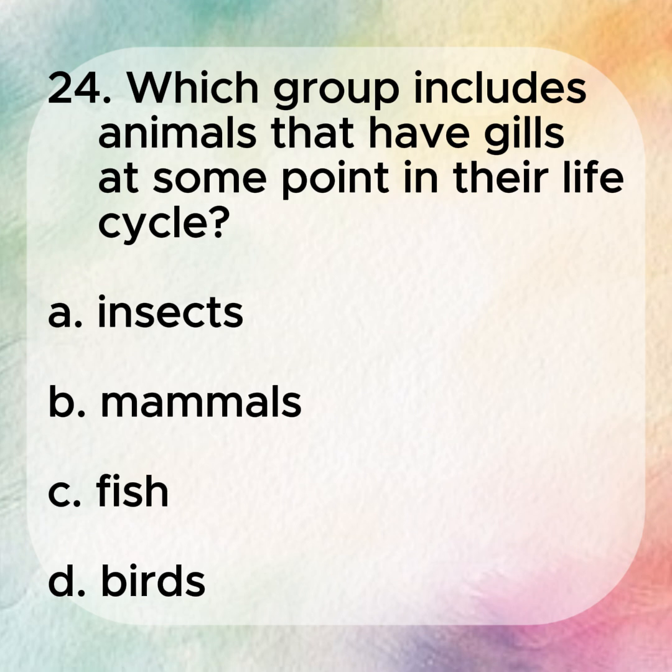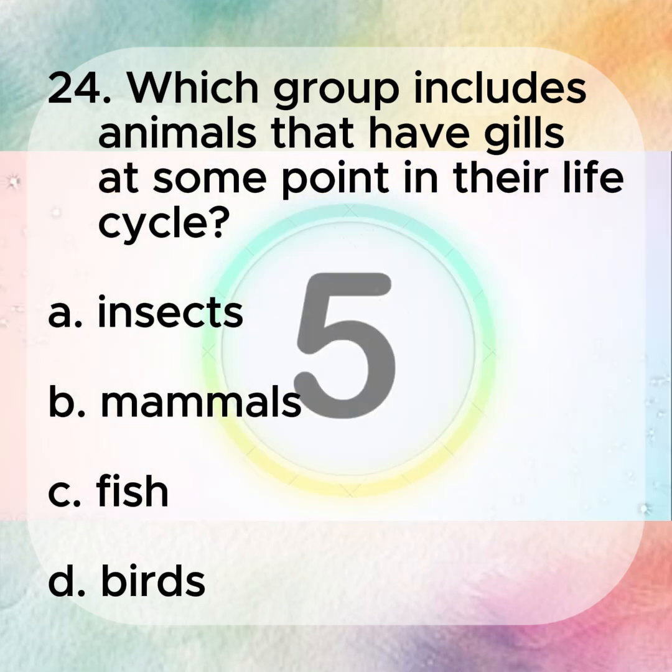24. Which group includes animals that have gills at some point in their life cycle? A. Insects. B. Mammals. C. Fish. D. Birds.